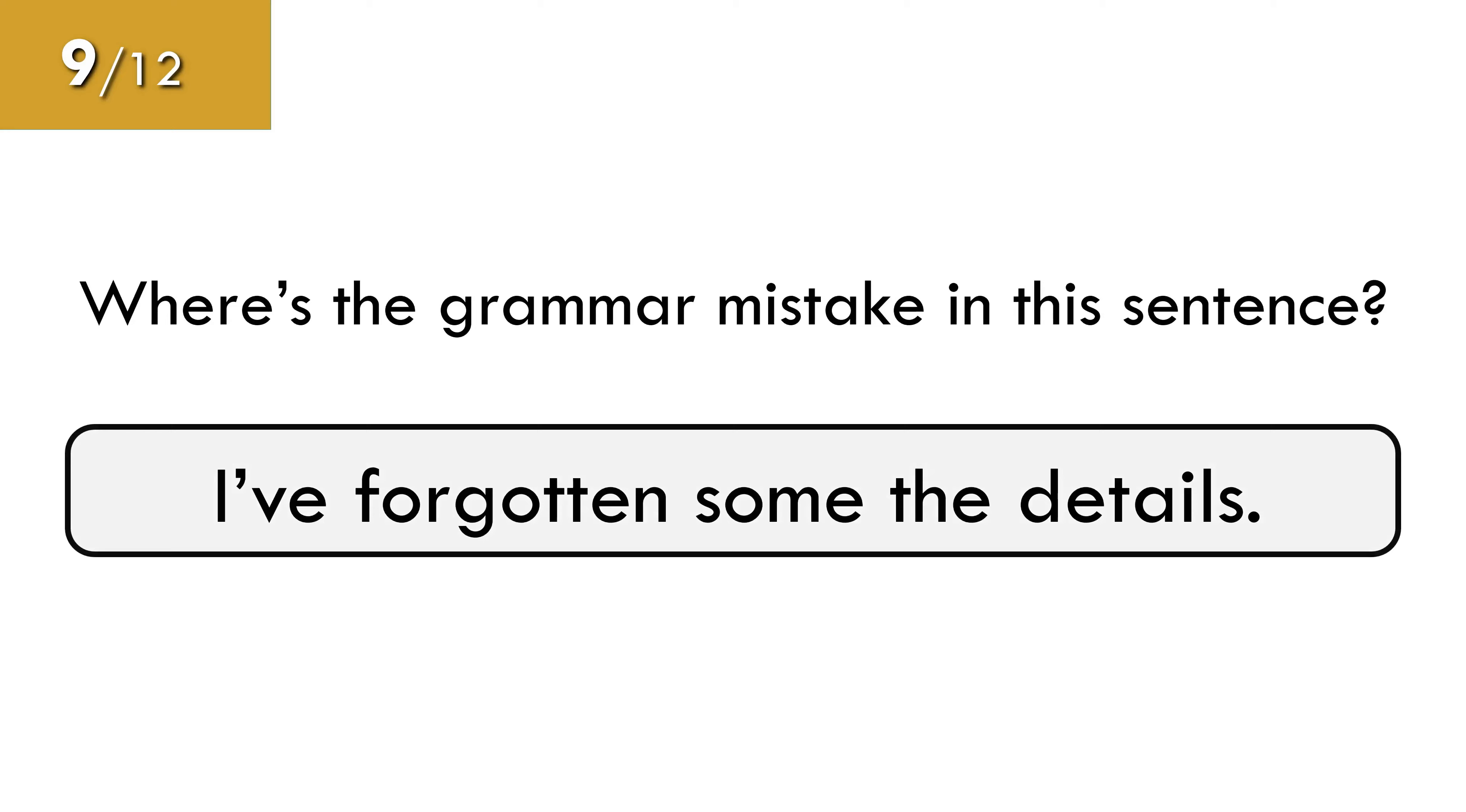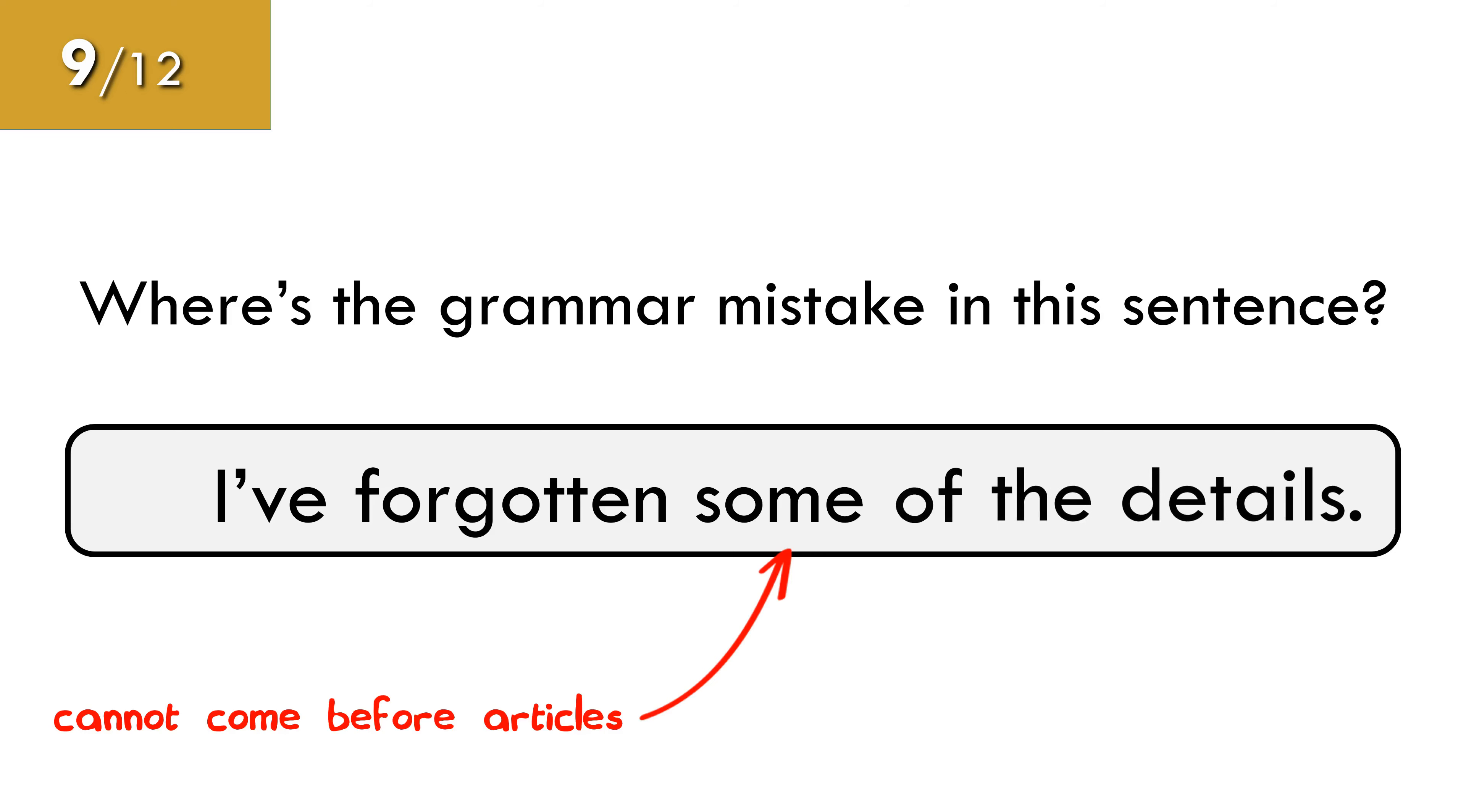Number 9. Where's the grammar mistake in this sentence? Quantifiers such as any, few, many, more, some, etc., and numerals cannot come before articles and demonstratives and possessives. In this case, we must use of after these words. I've forgotten some of the details.